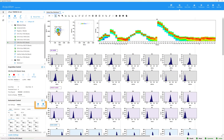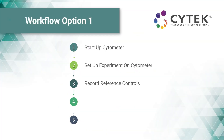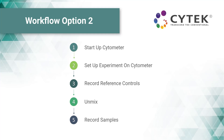If desired, these settings can be saved. When all reference controls have been recorded, the Unmix button becomes available. At this point in the workflow, there are two options to proceed. One option is to finish recording all tubes in the experiment and then select the Unmix button. The second option is to select the Unmix button to calculate unmixing and then record the rest of the tubes in the experiment.